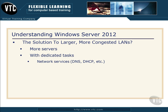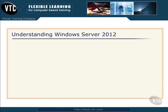Some servers take care of network services like naming issues — like DNS — and addressing issues for IP addresses and other things like DHCP, as well as file organization, which is really how we got here to start with. Different servers can handle client login and security and all kinds of other functions that we need on our networks.